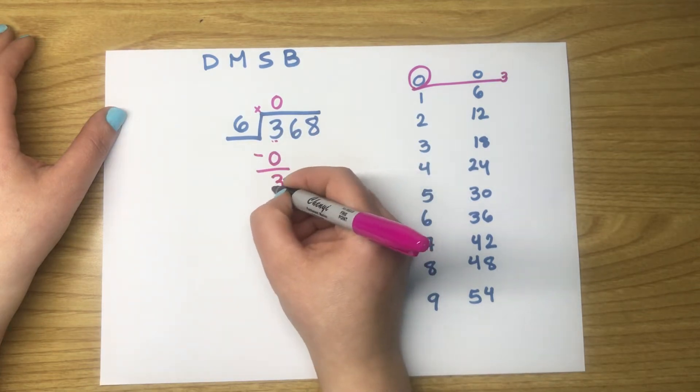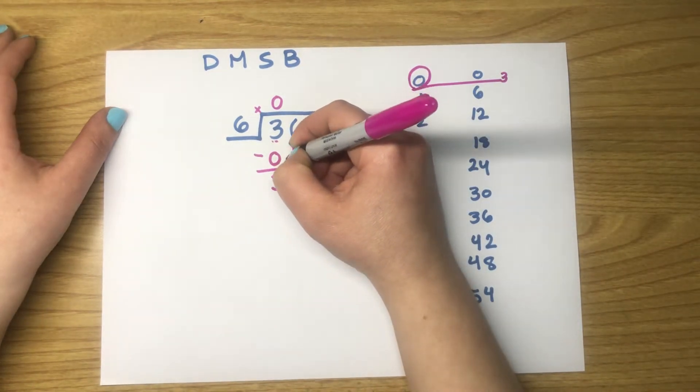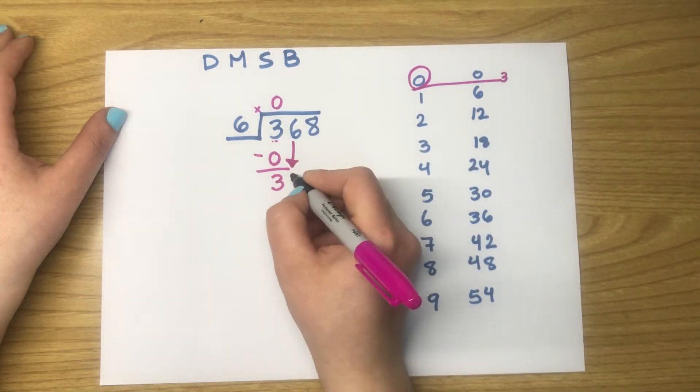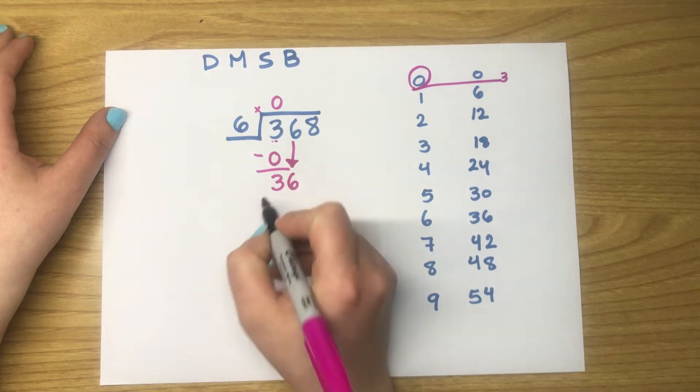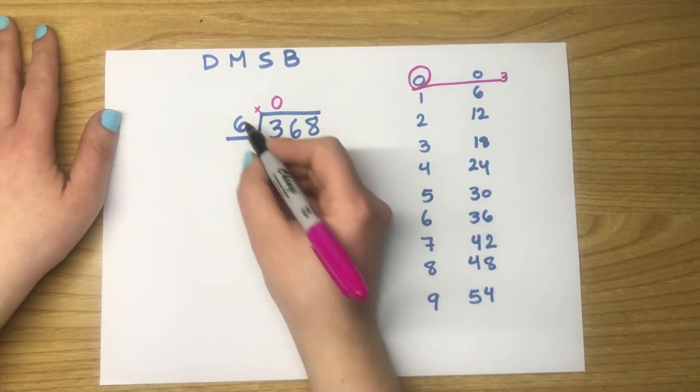Time to bring down the next digit, which is 6. The arrow only reaches the subtraction line. Now put the 6 beside the 3, and we have a new number to divide by 6, which is 36.